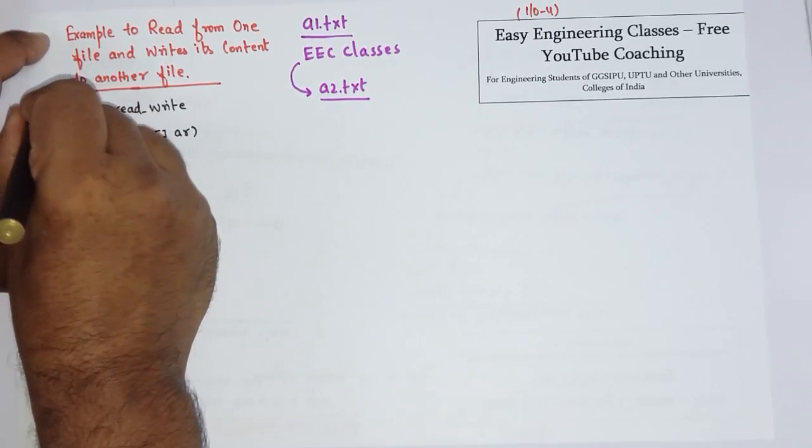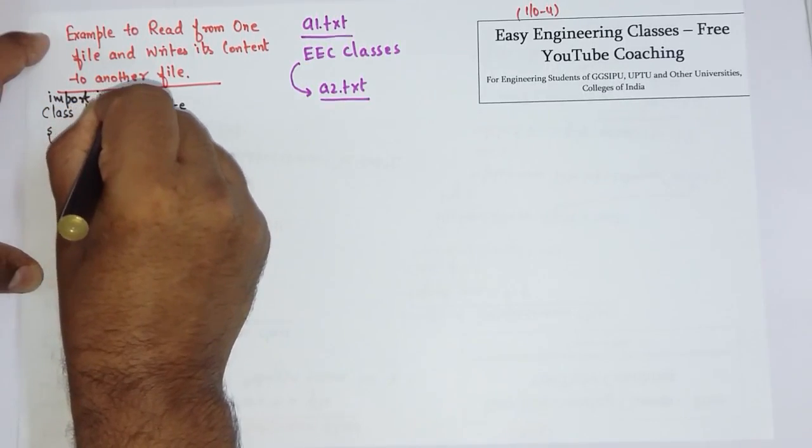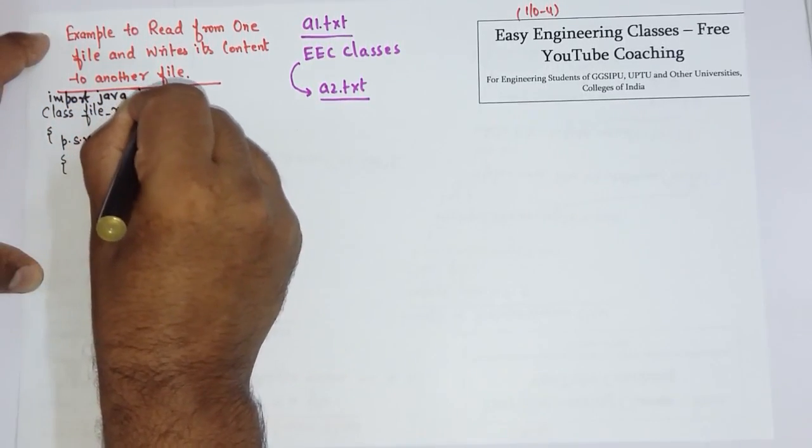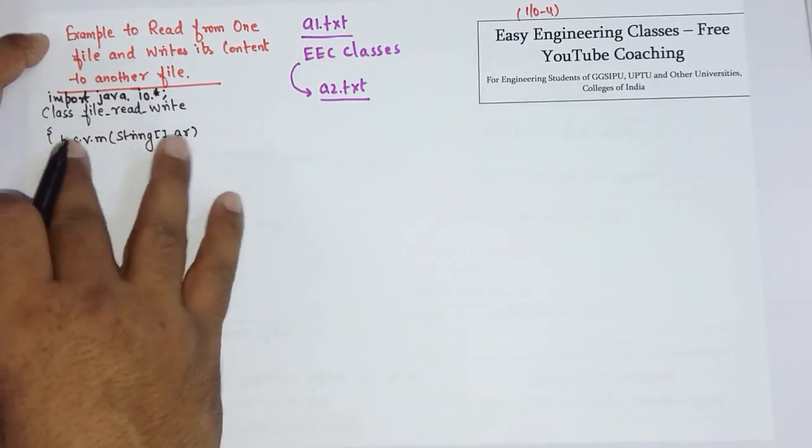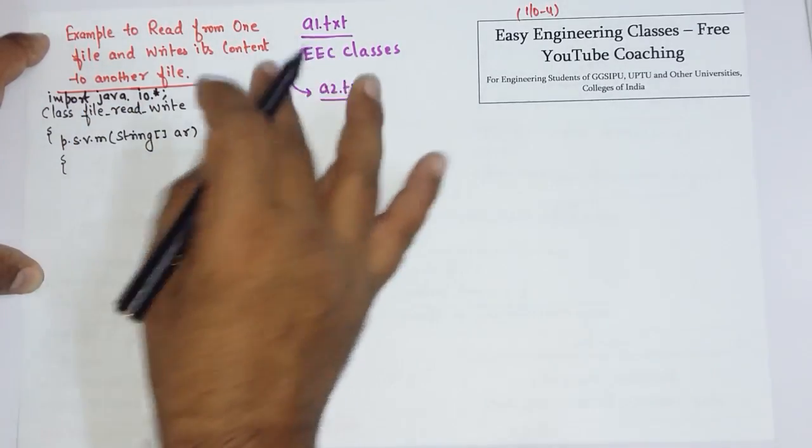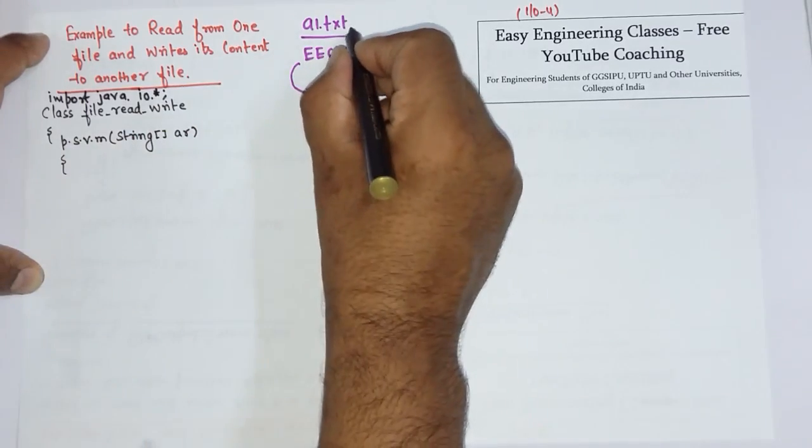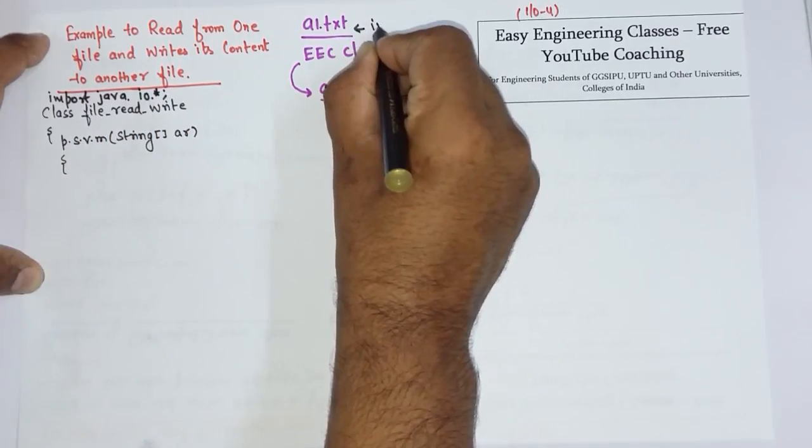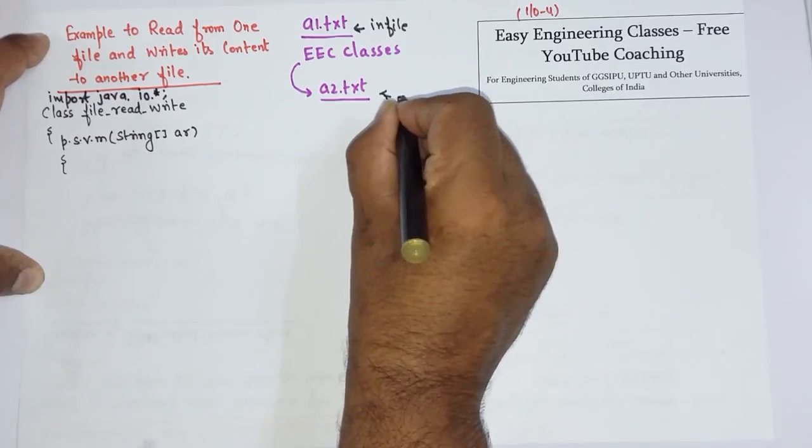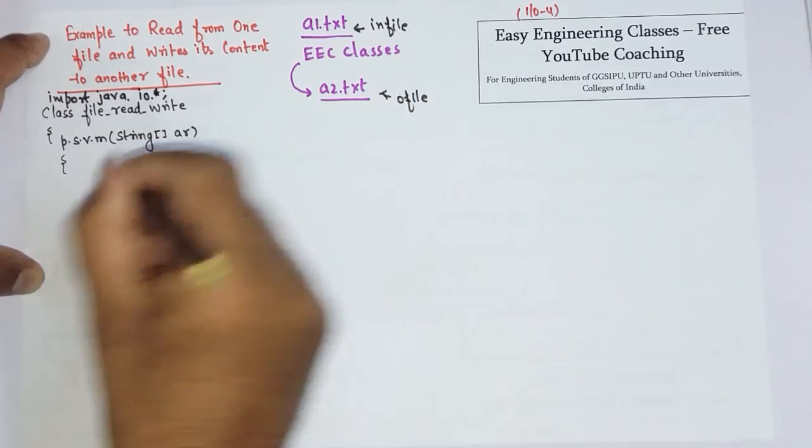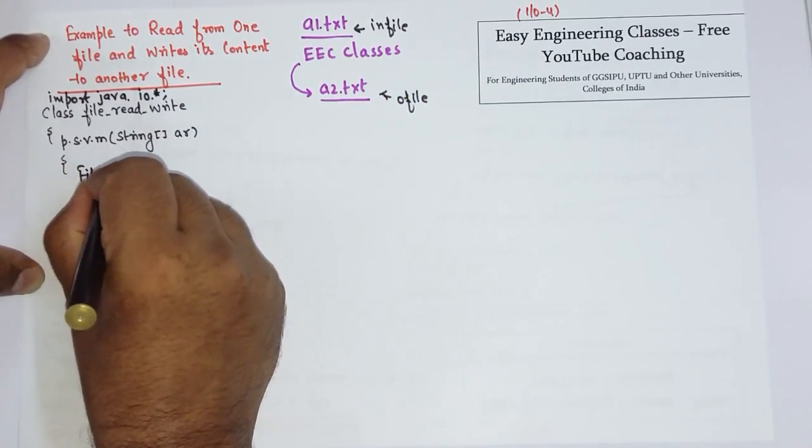First you have to create a file and import java.io package. So I have created a file 'file_read_write' and the main method. Now you need two different types of files: one is for input file, this is the in-file, and one is the out-file. So create two file objects - one is in-file, associated with a1.txt.